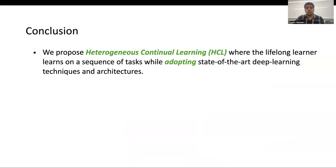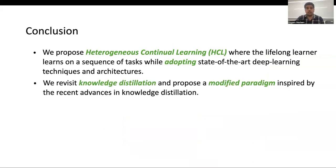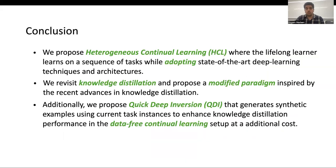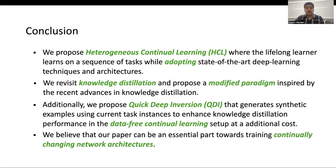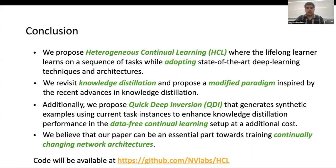In conclusion, we propose a Heterogeneous Continual Learning setup in this work, where the goal of the lifelong learner is to learn on a sequence of tasks while also adopting state-of-the-art deep learning methods and techniques. We revisit knowledge distillation and propose a modified paradigm inspired by recent advances. We also propose Quick Deep Inversion, which generates synthetic examples using current task instances to enhance performance in the data-free CL setup. We believe our paper is an essential step toward training continual learning architectures that are adaptive to the state-of-the-art architecture regime and sequential data. Our code will be available at the following link. Thank you.